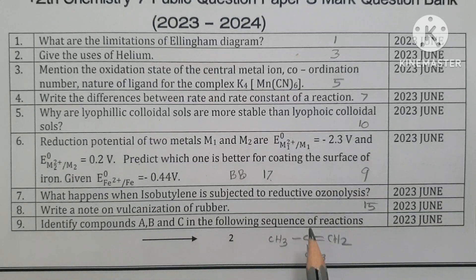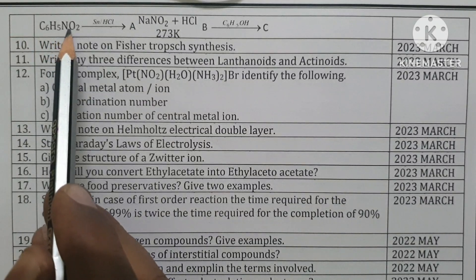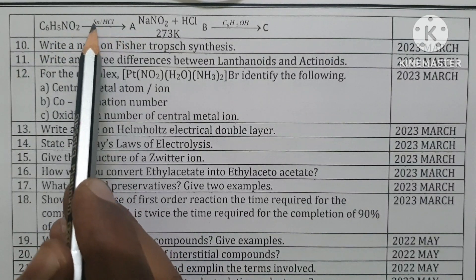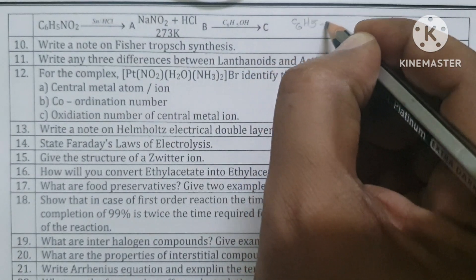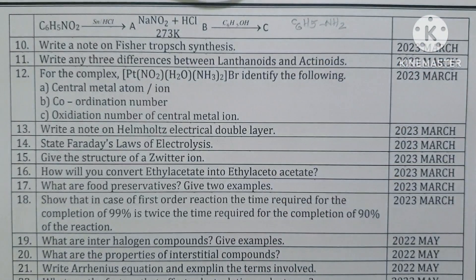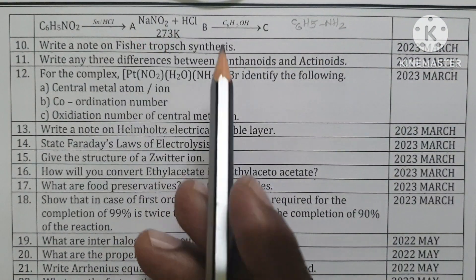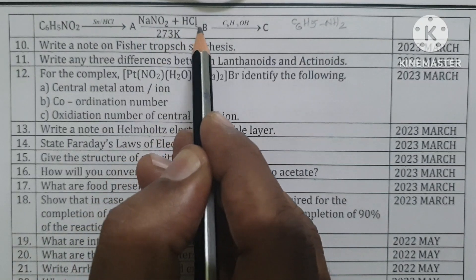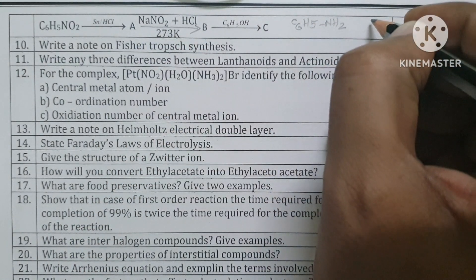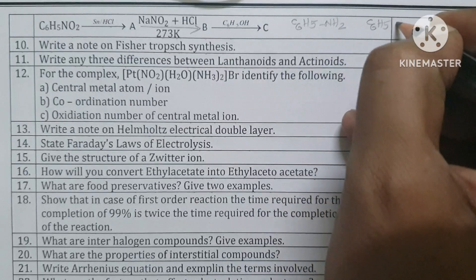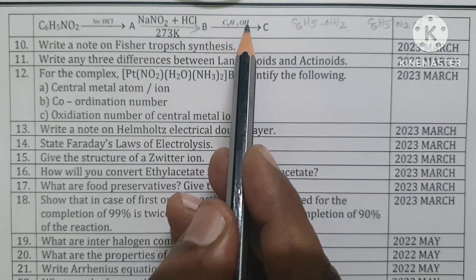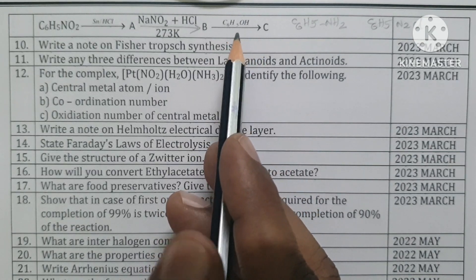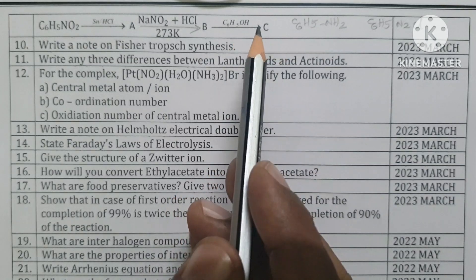Identify compounds A, B, and C in the following reaction sequence. Nitrobenzene when reduced with Sn/HCl: the NO2 group is reduced to NH2. Compound A is aniline (C6H5NH2). Aniline undergoes diazotization reaction to give benzene diazonium chloride (C6H5N2+Cl−). Benzene diazonium chloride reacts with phenol to give para-hydroxyazobenzene. That is compound C.